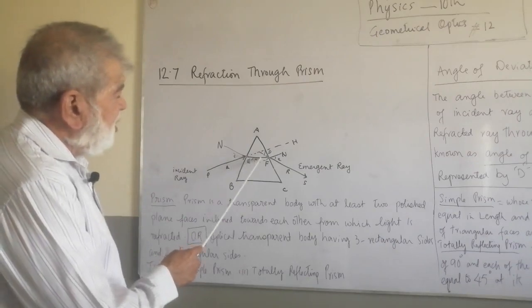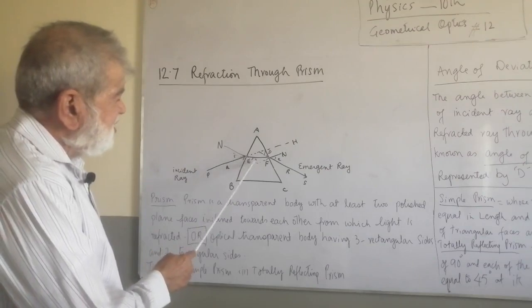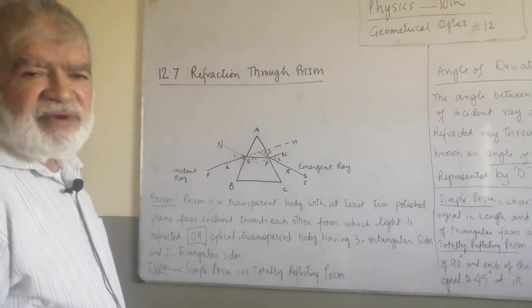That which the ray, refracted ray, makes with the normal. We extend this normal towards the side. R is the angle of refraction.